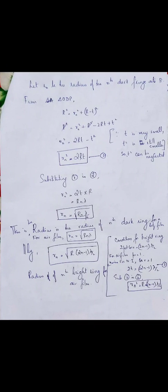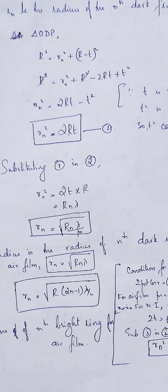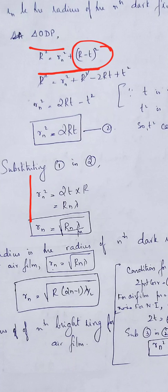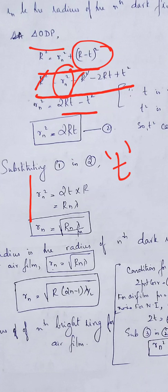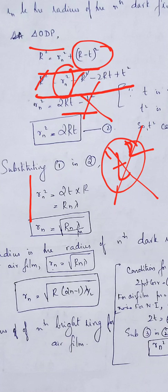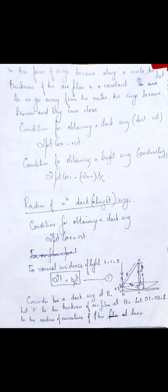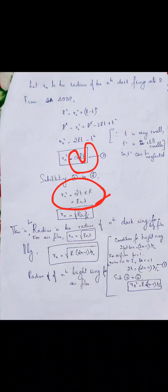Expanding: R² = rₙ² + R² − 2Rt + t². The R² terms cancel, giving rₙ² = 2Rt − t². Since t is very very small, t² is still smaller, so we neglect t². Thus rₙ² = 2Rt. For a dark ring, we already have 2t = nλ/μ. Substituting in place of 2t, we get rₙ² = R·n·λ/μ.